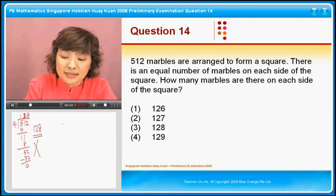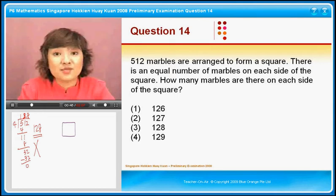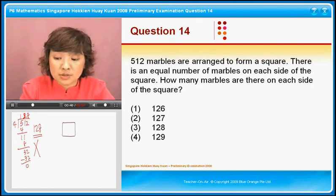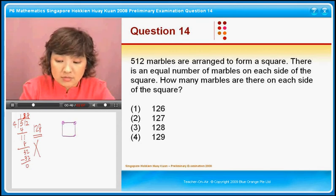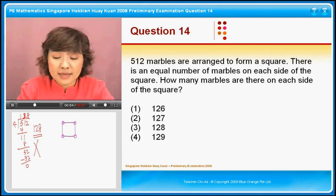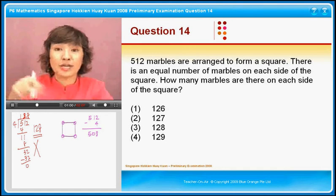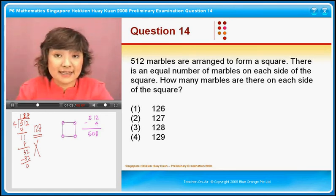The reason is that they say there's a square, right? And remember a square has 4 corners. So what we normally do is we will put 4 of the marbles at the corners first. So if initially you have 512, you must minus out 4 because you have taken 4 to put at the corners. So you have 508 left.